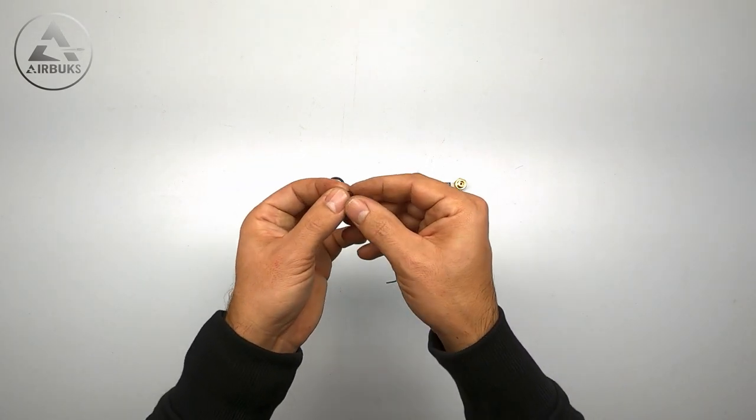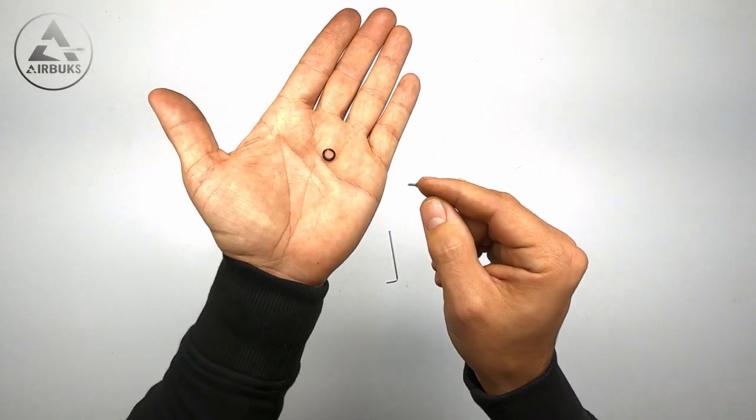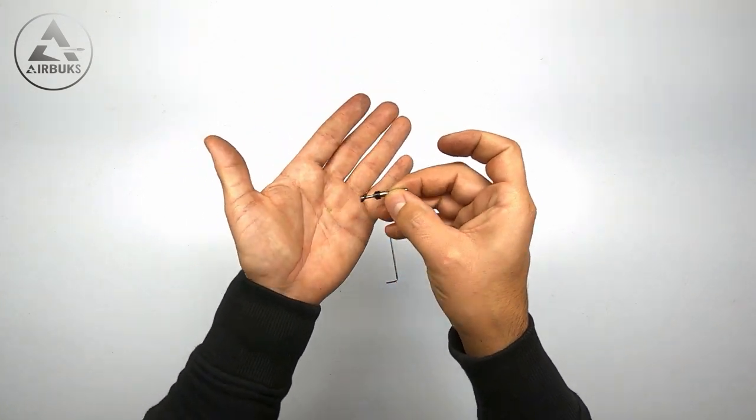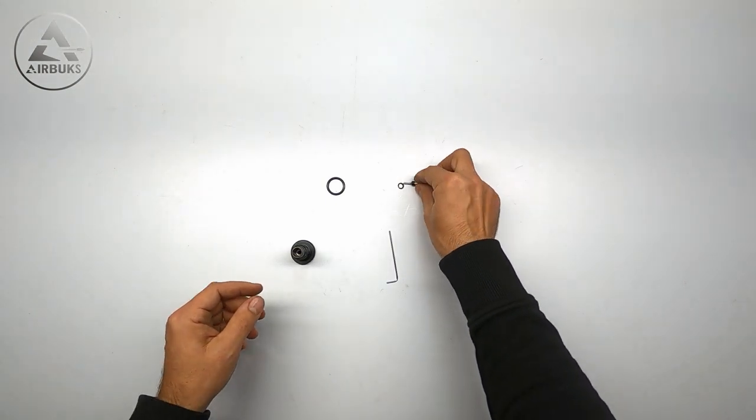And I'll take a small allen key. And as you can see here is the failed o-ring. Probably it got pinched like this between the valve and that's why the air rushes out and the valve can't close.